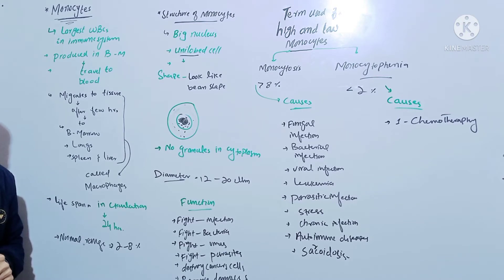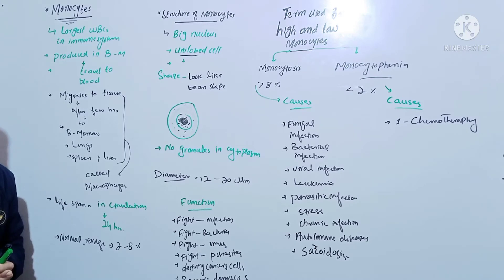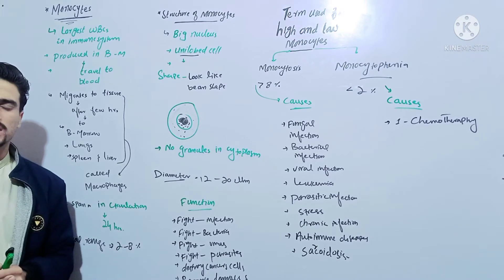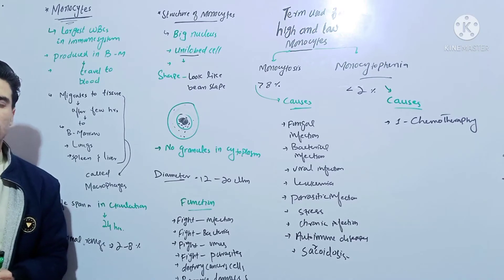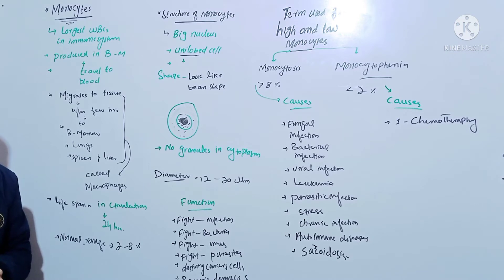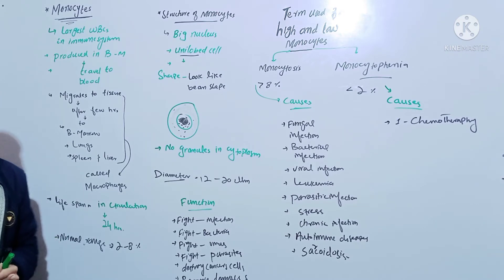Now come to the lifespan of monocytes. The lifespan of monocytes in circulation is 24 hours. Now come to the normal range of monocytes — the normal range of monocytes is around about 2 to 8 percent in the blood.